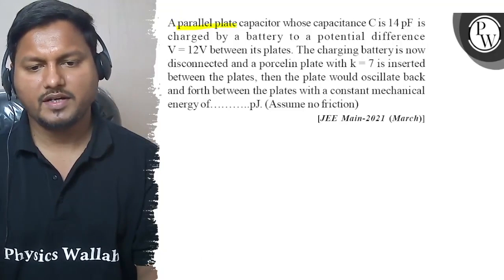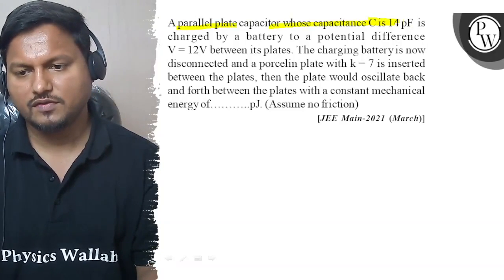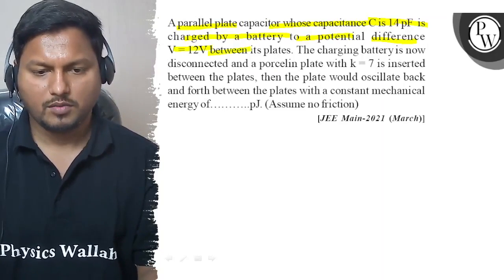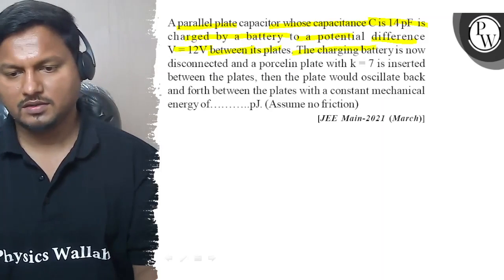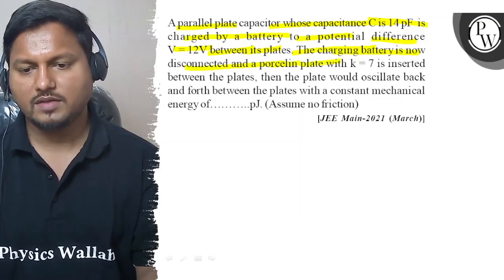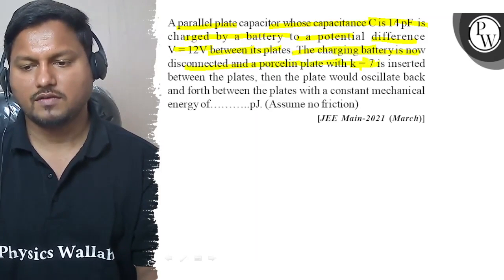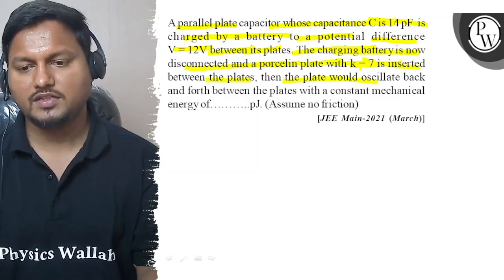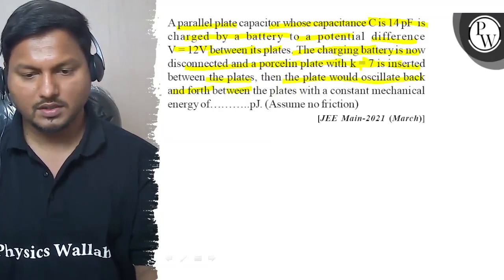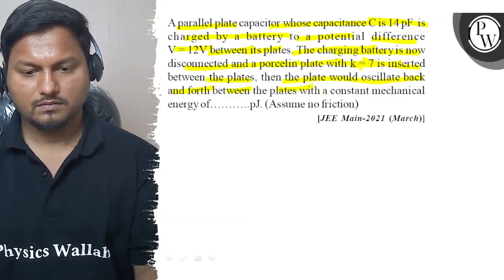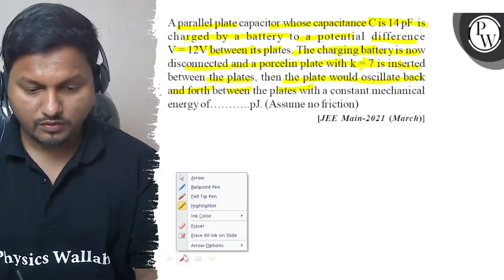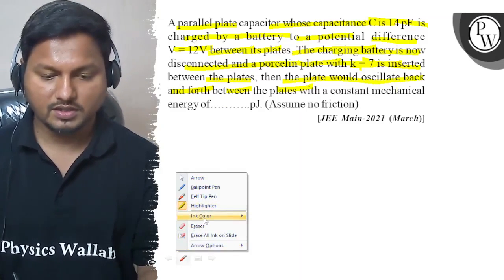Hello, let's see this question. A parallel plate capacitor whose capacitance is 14 pF is charged by a battery to a potential difference of 12 volts. The battery is now disconnected and a porcelain plate with dielectric constant k equals 7 is inserted between the plates. We are asked to find the mechanical energy change when the dielectric is placed between the plates.